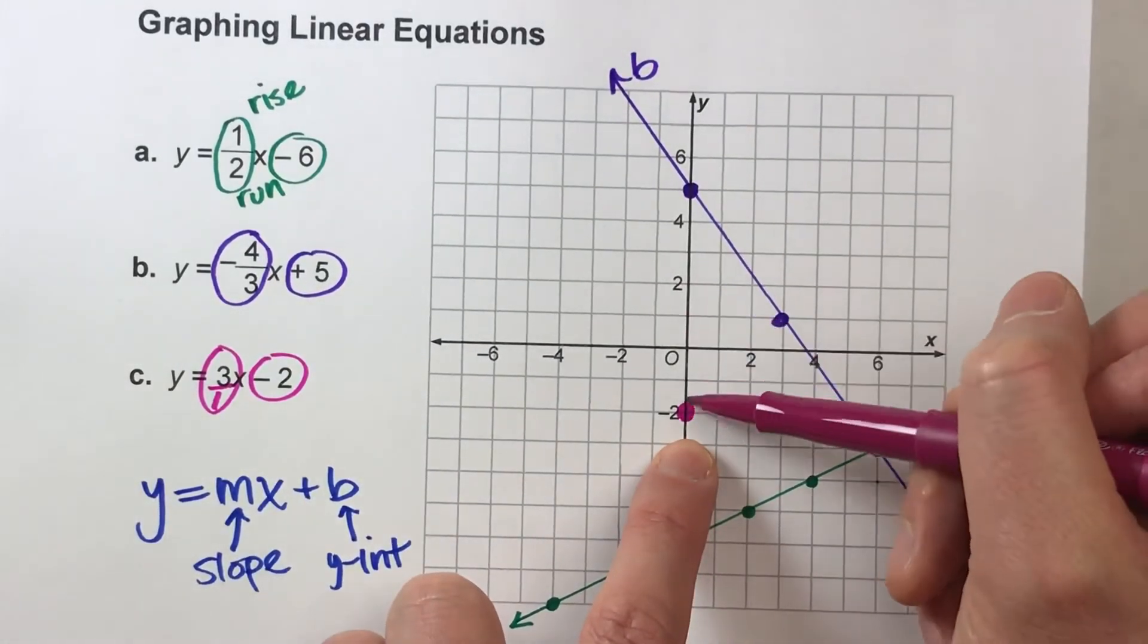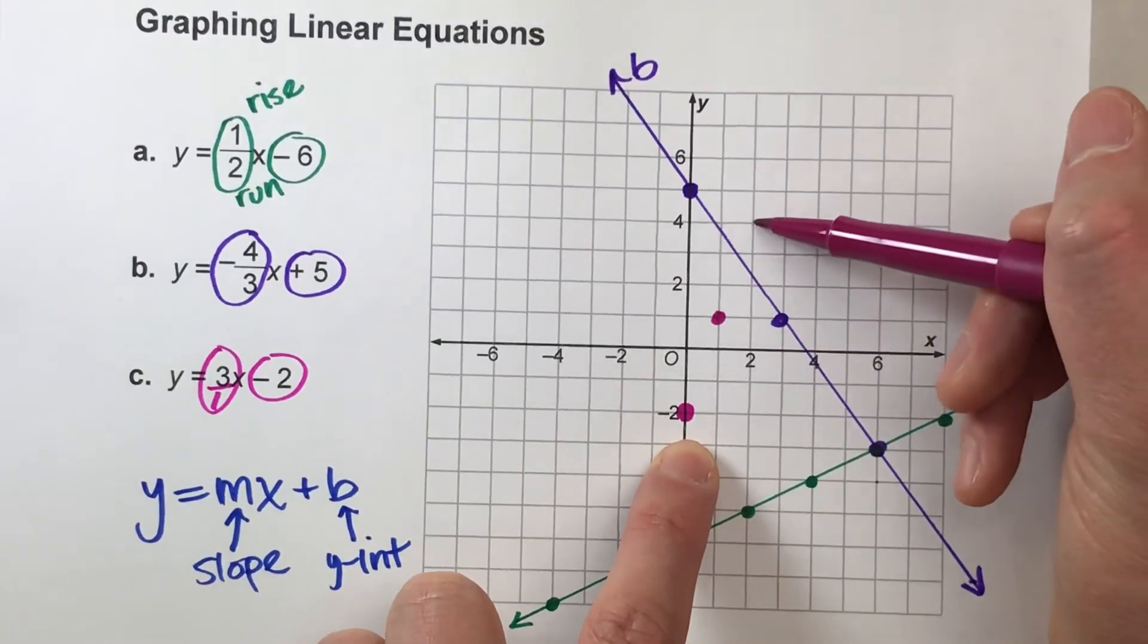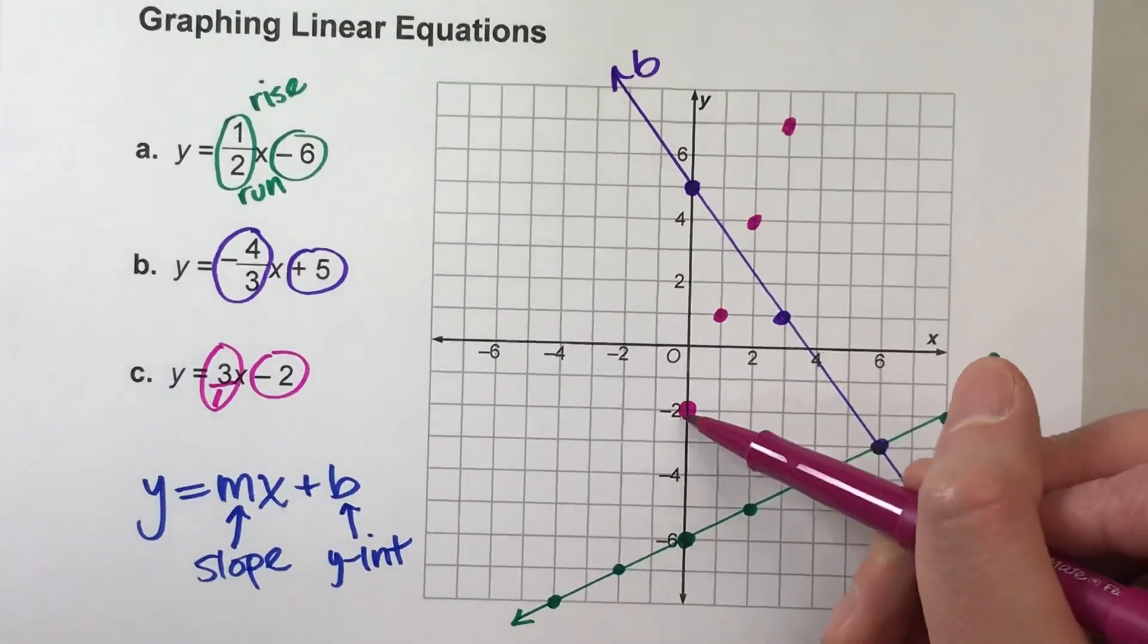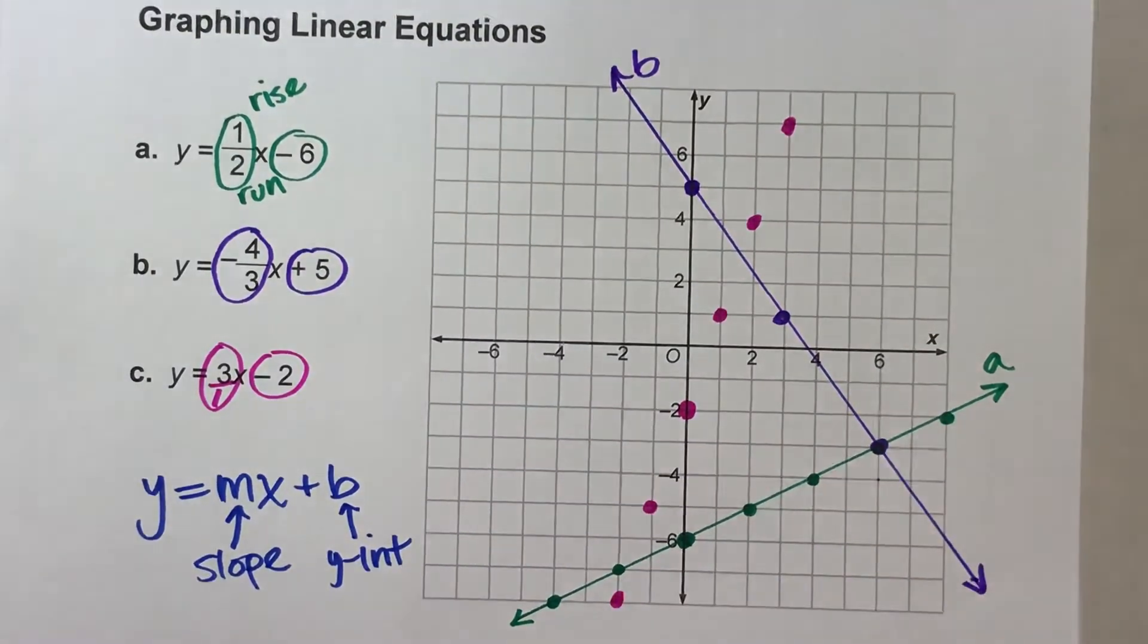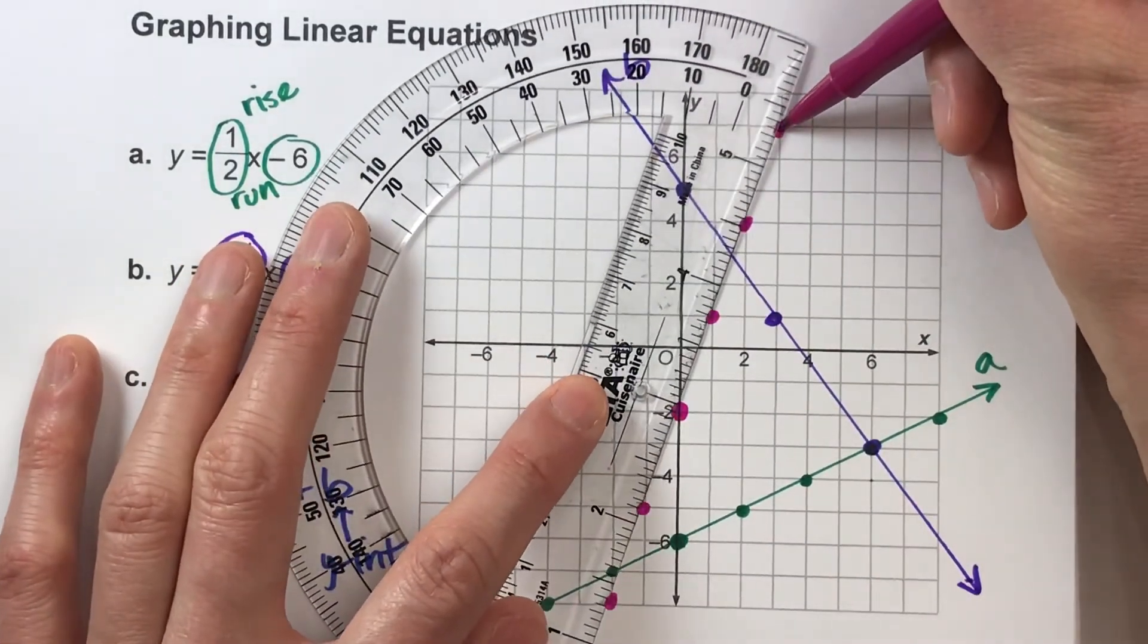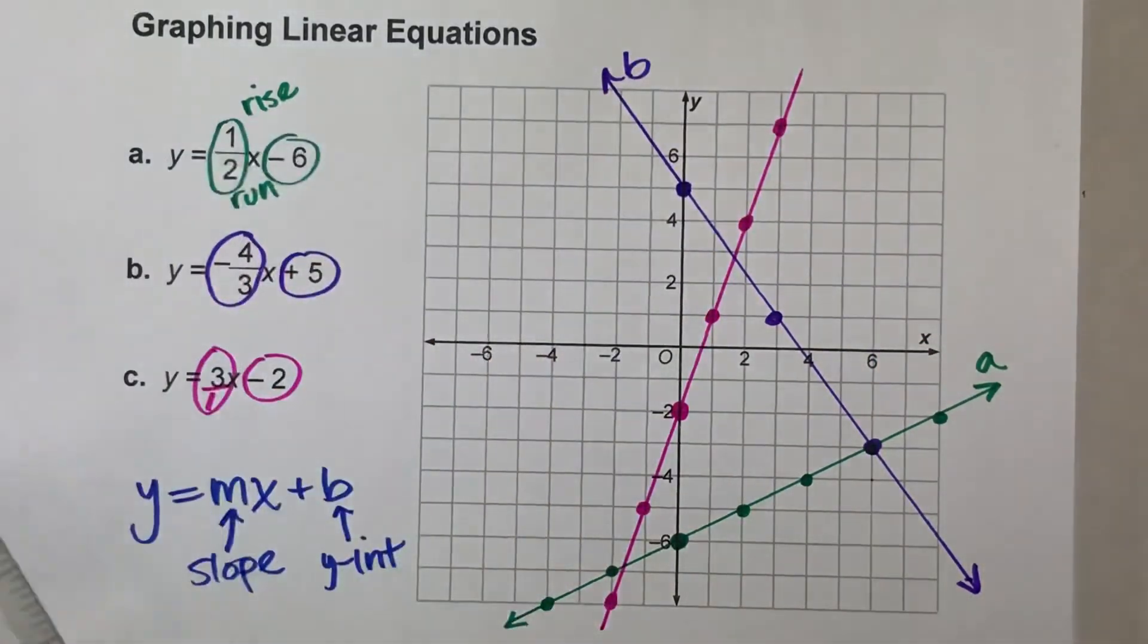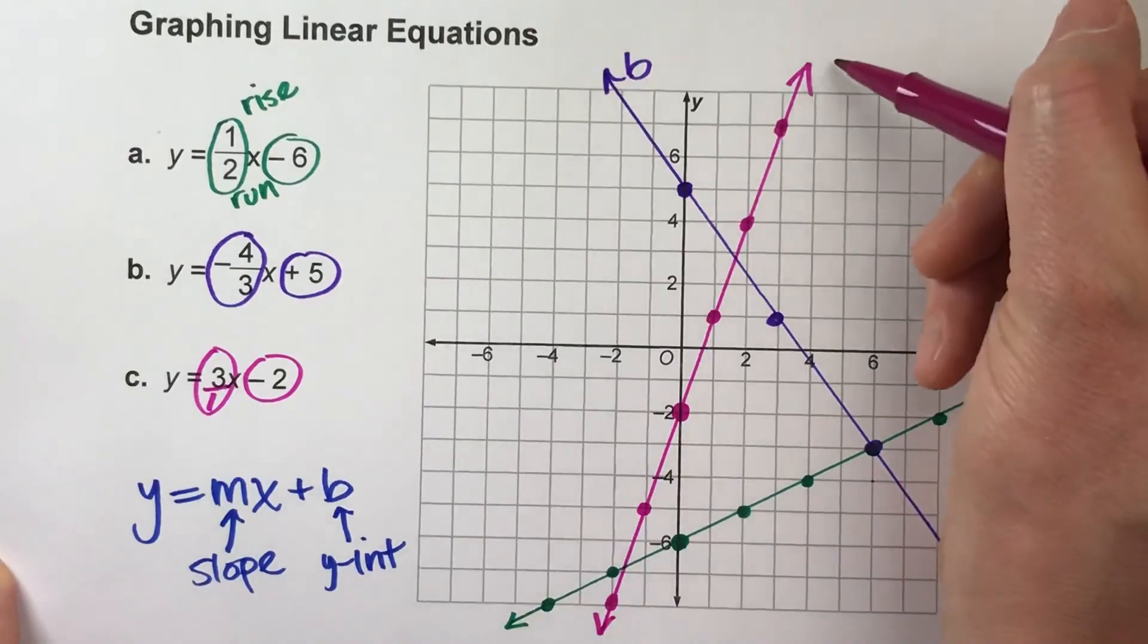1, 2, 3. Right 1. Up 3, right 1. Up 3, right 1. And then I'm going to continue the pattern the other way, too. So that way, when I draw my line, I know where to plot the line through. There it is, right there. I'll put arrows on the end to show it goes on forever, and I'll label it C.